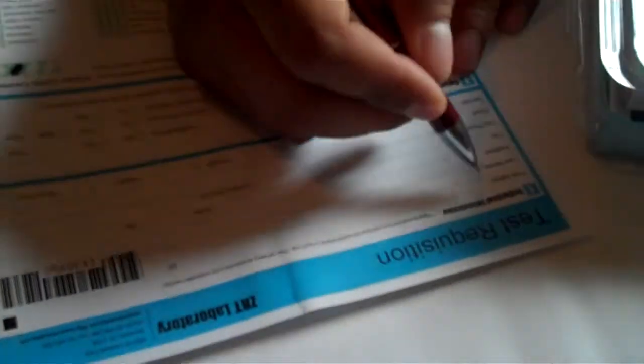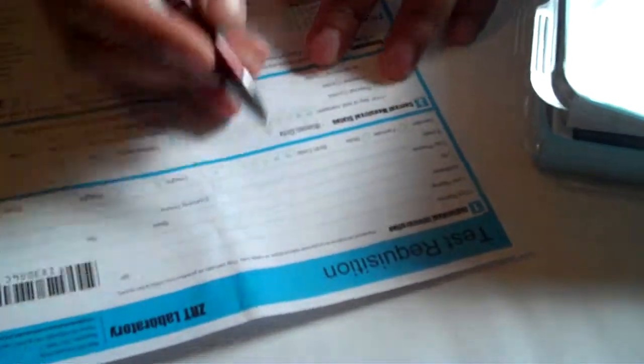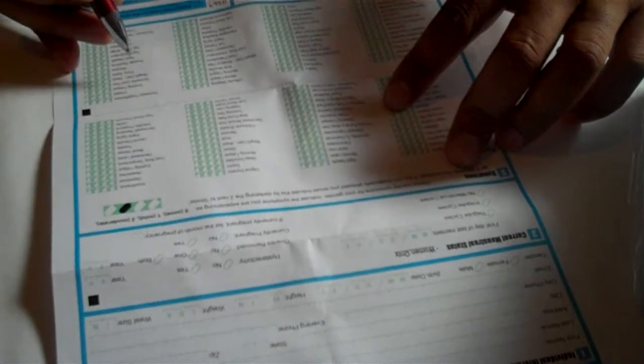So you get your test. First thing you have is an information sheet. Take the information sheet and fill out your information. Skip this second section. Go over to this section for men and complete that.